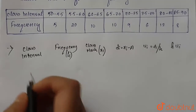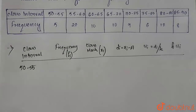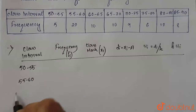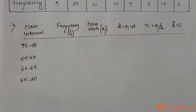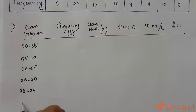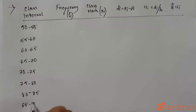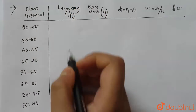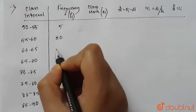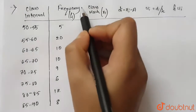The class intervals given are: 50–55, 55–60, 60–65, 65–70, 70–75, 75–80, 80–85, and 85–90. The corresponding frequencies are: 5, 20, 10, 10, 9, 6, 12, and 8.